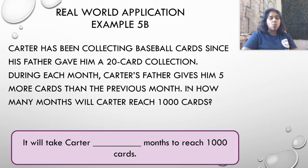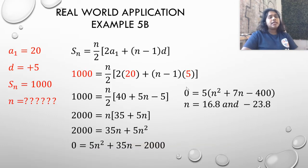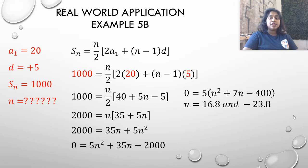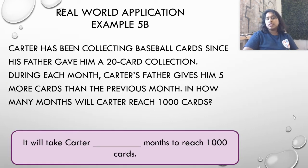Well, let's read that question one more time. In how many months will Carter reach 1,000 cards? Can he be doing this for negative 23.8 months? No. So immediately we know negative 23.8 cannot be our answer. So we know we're dealing with 16.8. But it will take Carter 16.8 months to reach 1,000 cards. What the heck is 0.8 of a month?